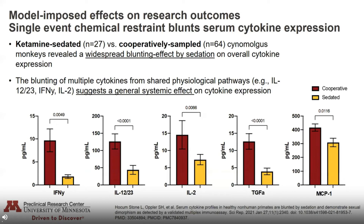To initially assess the differential effects of handling method on physiology, we retrospectively analyzed differences in serum cytokine expression from samples collected from naive healthy animals either cooperatively or under sedation. In these figures, the red bars represent cooperatively handled animals while the yellow bars represent ketamine-sedated animals. Our analysis revealed a widespread blunting effect by sedation on overall cytokine expression. The blunting of multiple cytokines from shared physiological pathways — such as IL-12, IL-23, IFN-gamma, and IL-2 — suggests a general systemic effect of sedation on cytokine expression. This can have significant implications for studies relying on assessing changes in immune response, as it may potentially either hide or overpower changes that are actually occurring.